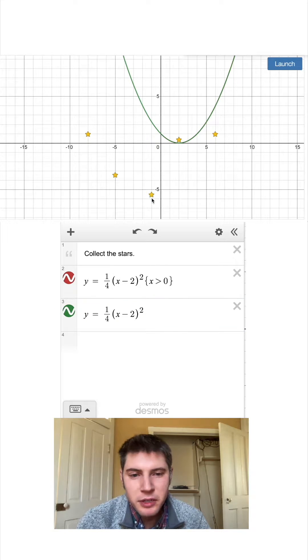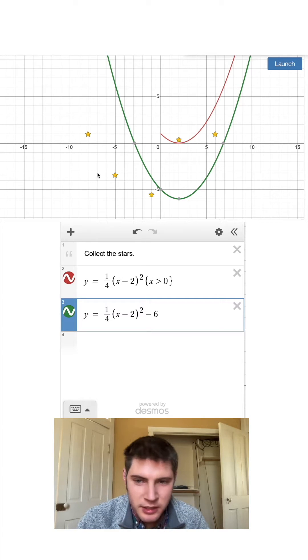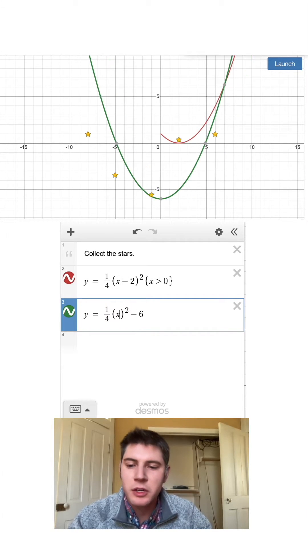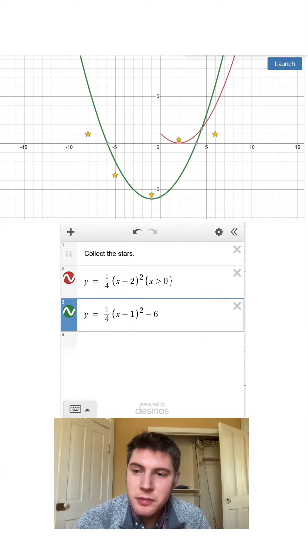Let's line it up with this middle star. So let's bring it down six. I'll say minus six. Let's move it to the left three, or in other words, one to the left of the y-axis. So we'll say plus one. And now we've lined up with the bottom star. Now let's make it wider.